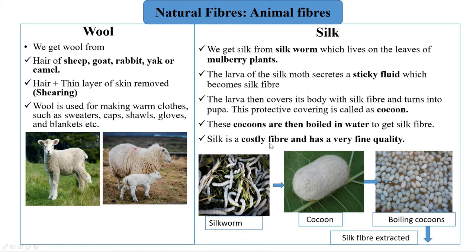Silk is a costly fiber with very fine quality. We get silk from the silkworm, which lives on the leaves of mulberry plants. The larva of the silk moth secretes a sticky fluid which becomes silk fiber. The larva then covers its body with silk fiber and turns into a pupa. This protective covering is called a cocoon. In simple words, the silkworm covers itself with a protective covering known as a cocoon. These cocoons are then boiled in water to get silk fiber.